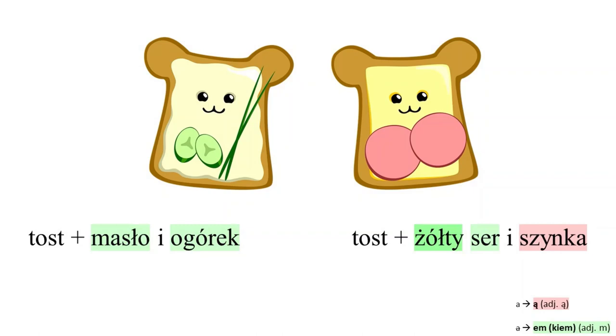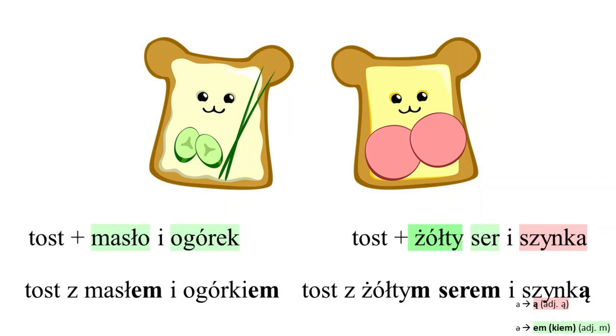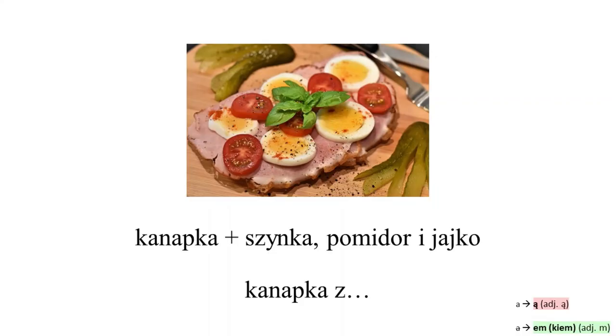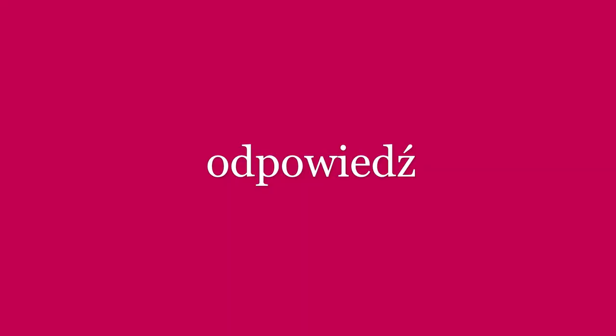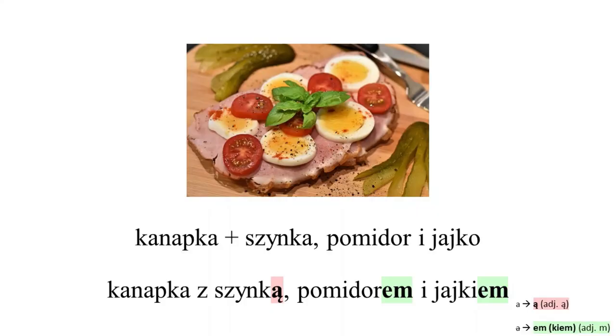Let's try the first exercise. You are going to see pictures and your task is to make the correct instrumental case form. Co to jest? To jest toast z... Toast z masłem i ogórkiem. Toast z żółtym serem i szynką. Kanapka z szynką, pomidorem i jajkiem.